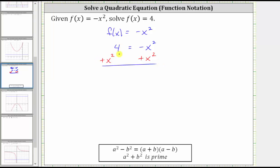Simplifying on the left, we have four plus x squared. Using the commutative property of addition, let's write that as x squared plus four. Equals on the right side, we have negative x squared plus x squared, which is equal to zero.